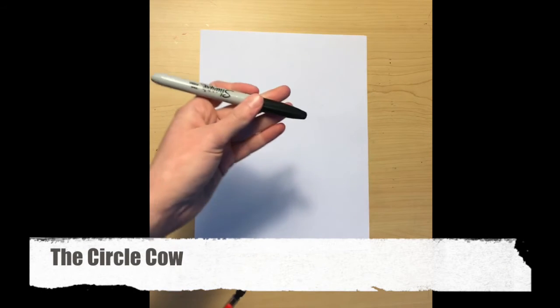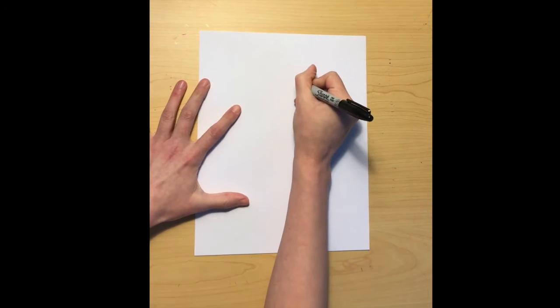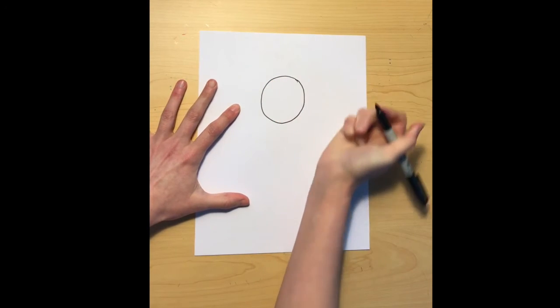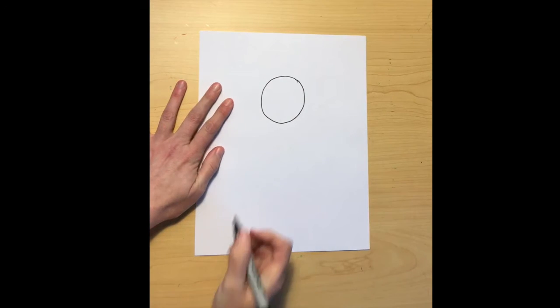Now let's try a circle cow. I'm going to use my Sharpie again, but I still recommend you use pencil. Let's draw a smaller circle towards the top of your page, but leave space at the top so we can put in ears and horns.